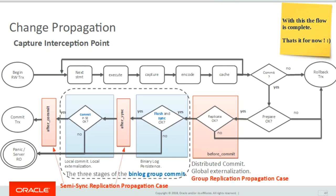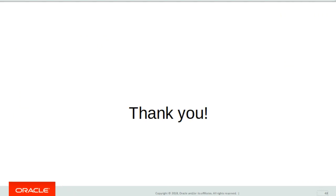After this, the transaction commit completes and the committing client receives the return status. To keep the video concise, I've not gone into technical details of bin log group commit stages — I'll shortly bring another video on that. With this, the capture flow and change propagation is complete, showing the binary log acting as a transaction coordinator. Thank you for watching this video.